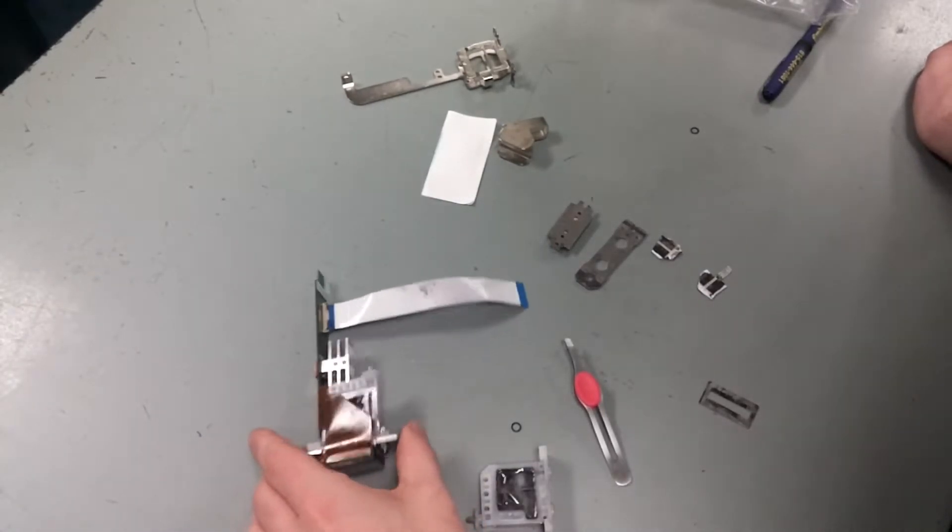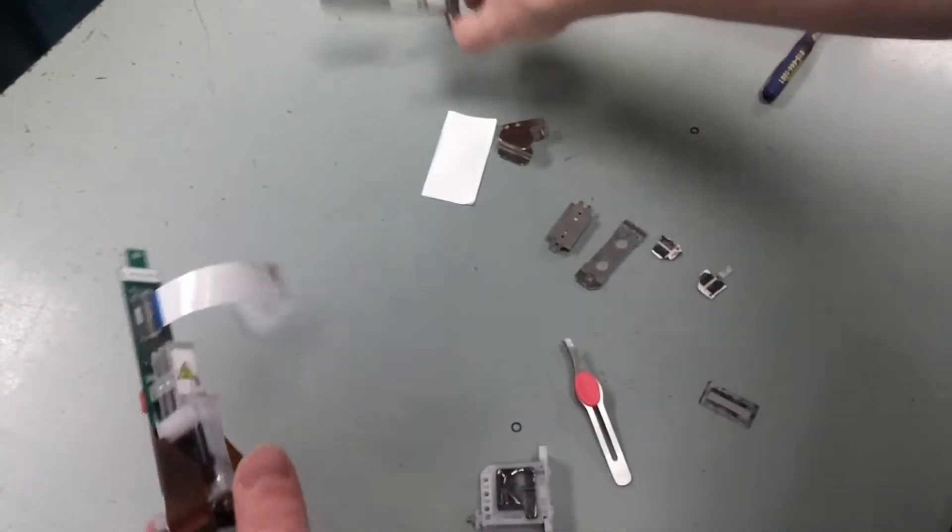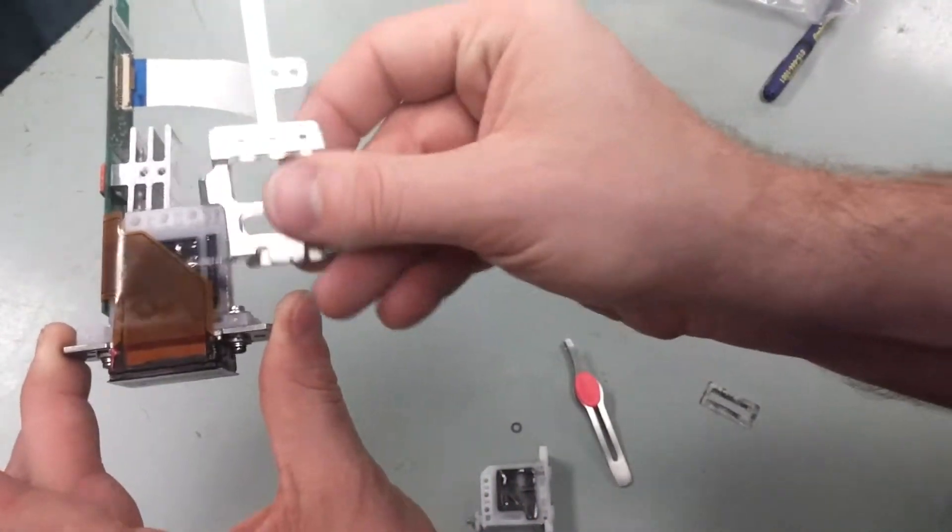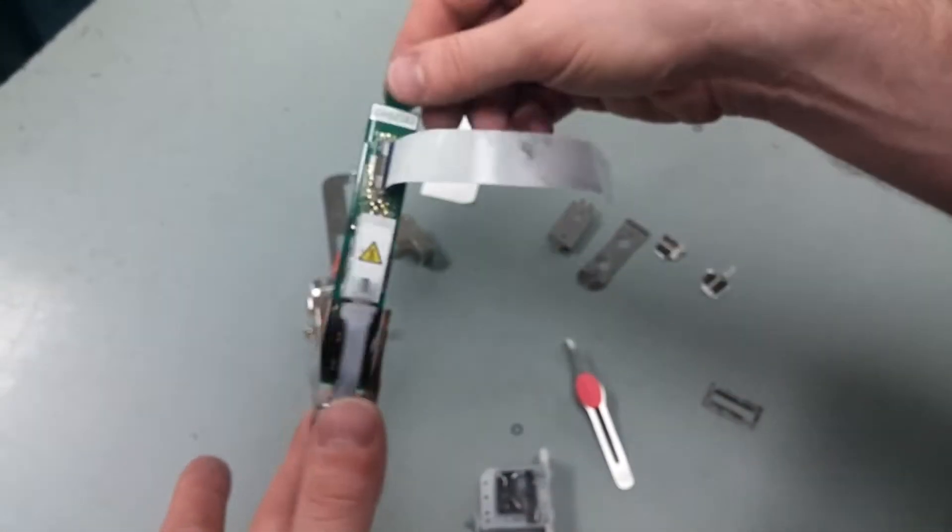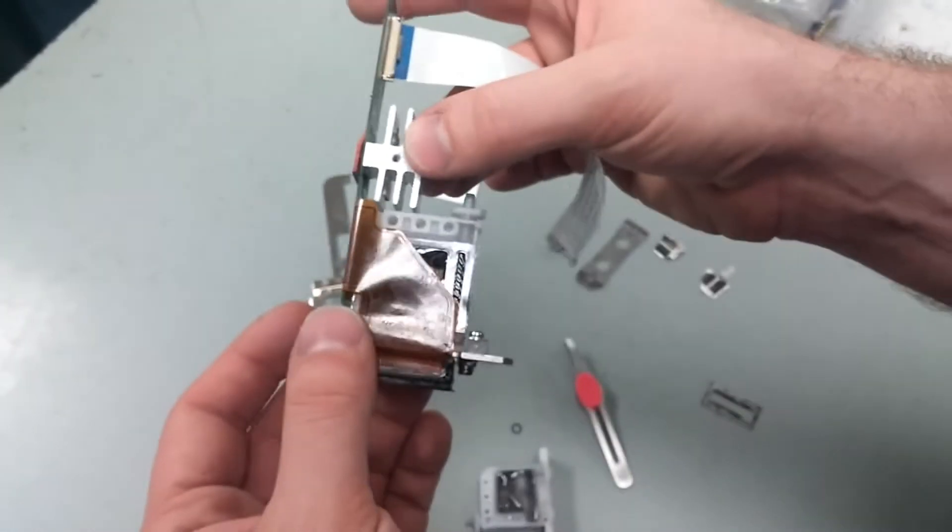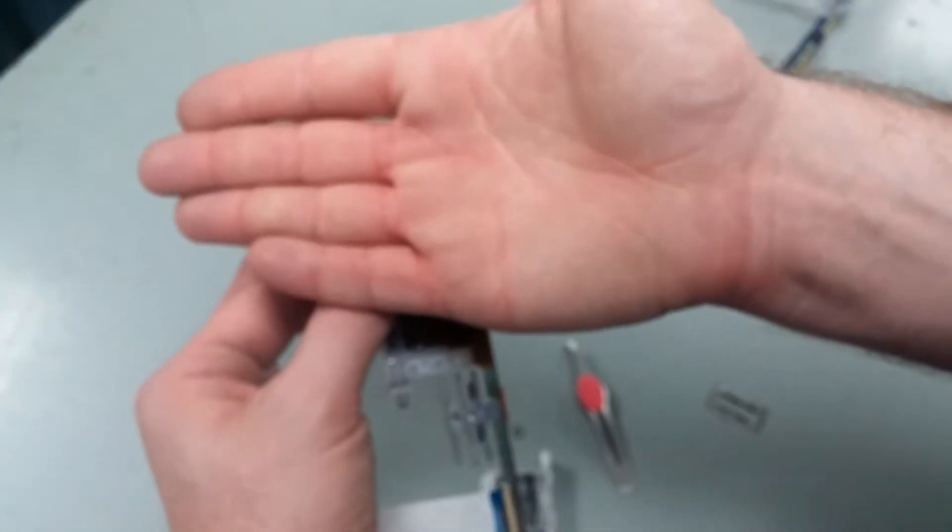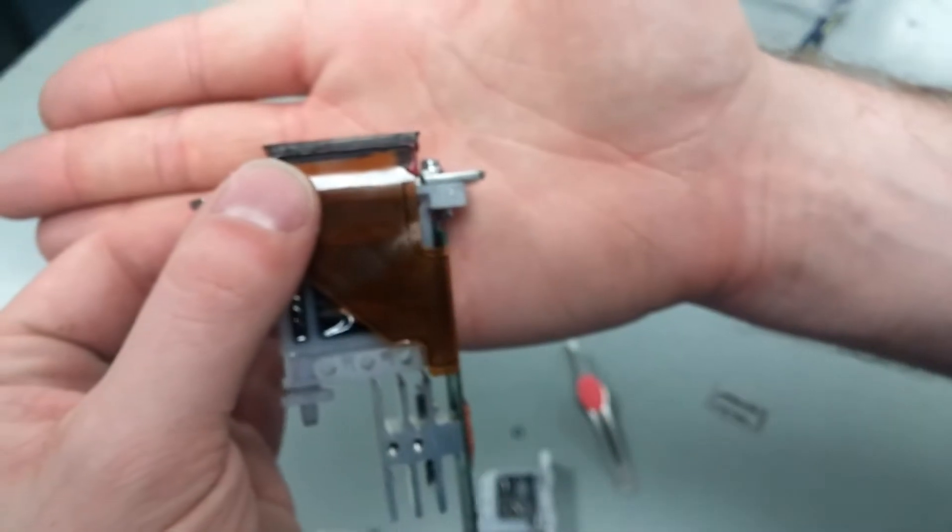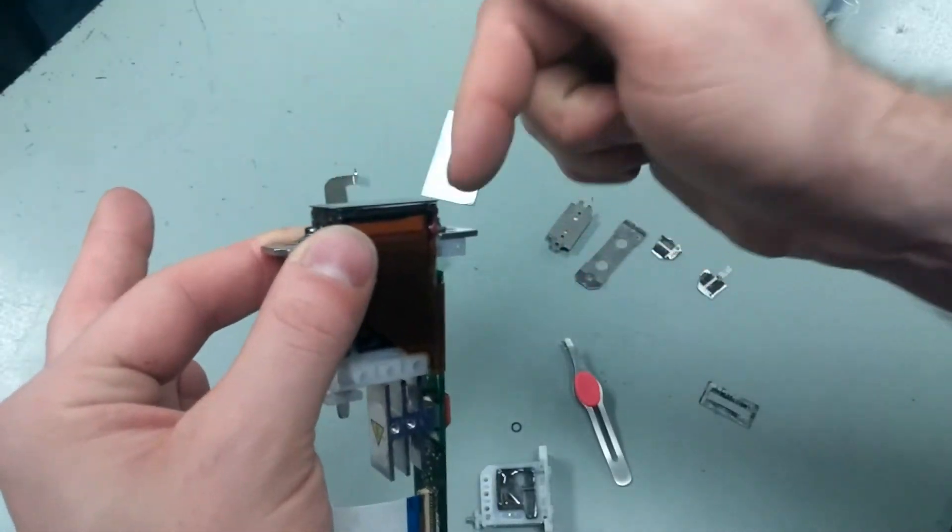So to start out, basically here is a printhead with the support arm and handle bracket removed. All it is, is this tiny little circuit board with a heat sink and with a ribbon cable going down to this part right here. There we go. So to this section right here.